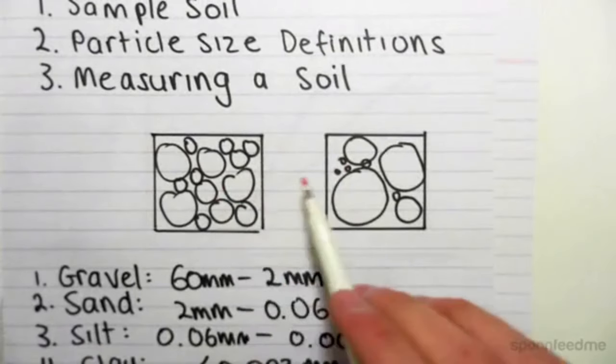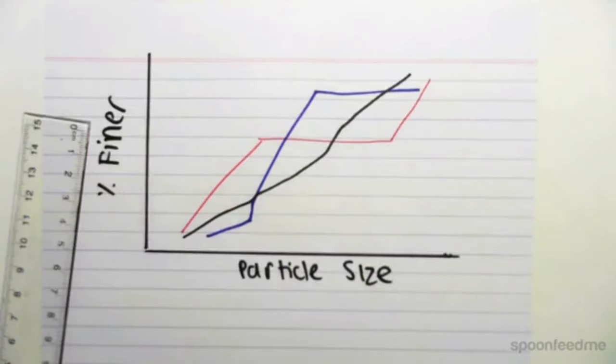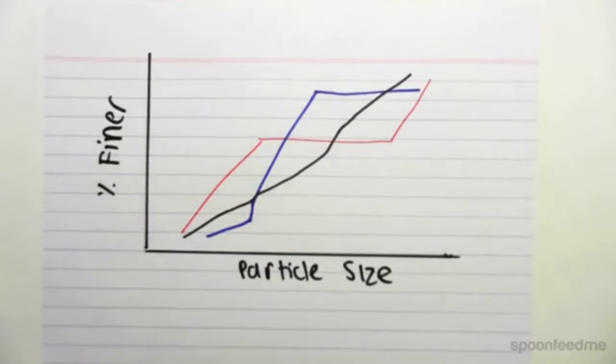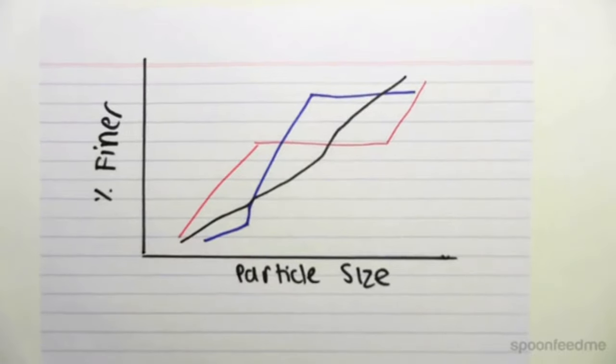You can see that all these curves represent all the different distributions of particles. We have different distribution of particles, and they can be shown graphically using these curves, and based on these curves and the criteria we're going to be developing in the next couple videos, we can come up with names of the different soils we have. Hope that helps. Thank you.